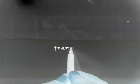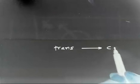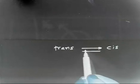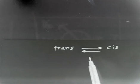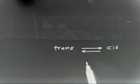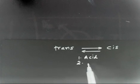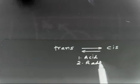Let us discuss the next problem, which is related to cis-to-trans conversion. A trans alkene can be converted into a cis alkene, or a cis alkene can be converted into a trans alkene. This can be done by two ways: either it can be acid-catalyzed or it can be radical-catalyzed.